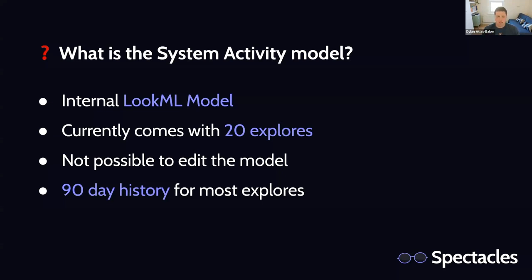The system activity model has information about queries, users, roles, content, and all that type of stuff. It exposes all that information in an explorer that is familiar to you because you're using Looker, giving you an interface to both ask questions and build reports on how your Looker instance is doing, how you are doing as Looker admins, and how rollouts are going. Despite this being a LookML model where you don't have access to the code, so it's not actually possible to edit the model, you can build queries on it and LookML dashboards that point to it — but you can't extend the model itself. Though there is one kind of workaround, and I'll talk about that in a little bit.